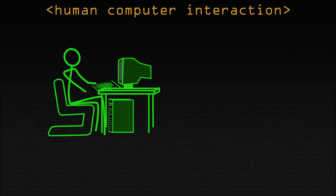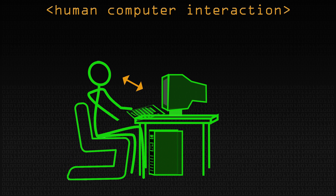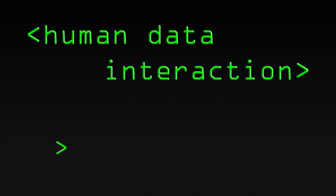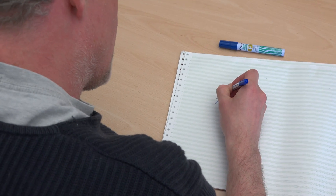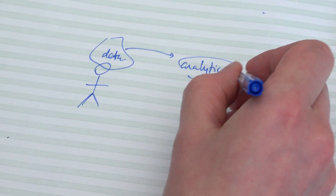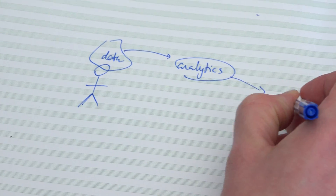We thought about how the world is developing this way and came up with the notion of something we call Human Data Interaction. There's a field in computer science called Human Computer Interaction where people have been studying for about 50 years. What's happening now is it's less about interacting with the machine specifically and more about interacting with data - data generated about you, data generated by you - and this data is used in the environment by computational devices. It feeds into analytics algorithms which then generate actions.